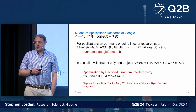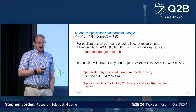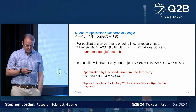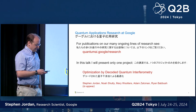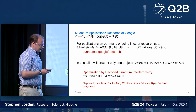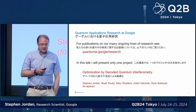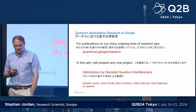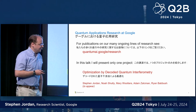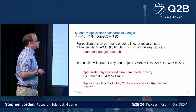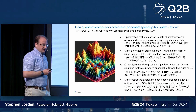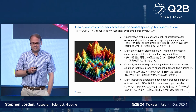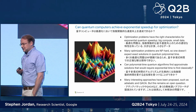For this talk, I won't attempt to give an overview of all the different research projects in quantum algorithms at Google — I felt that would be impractical, but if you want such an overview you can look at a website. Instead, I will give a deep dive into one specific project, titled Optimization by Decoded Quantum Interferometry, which I'm working on with some collaborators. The underlying motivating question is: can quantum computers achieve exponential speedup for optimization problems?